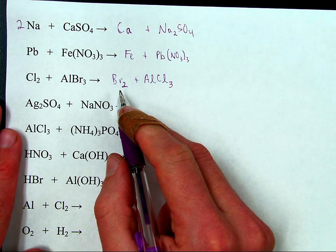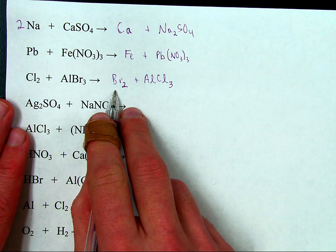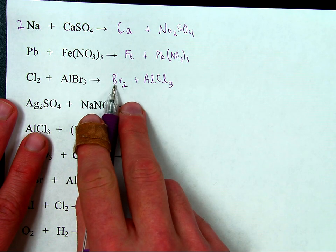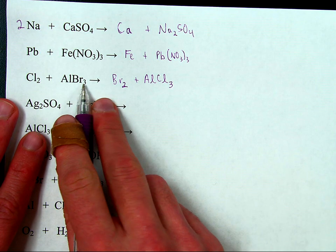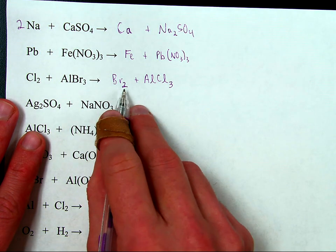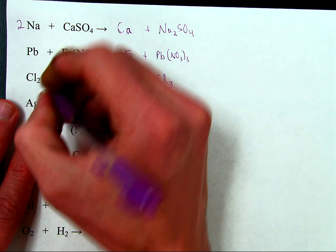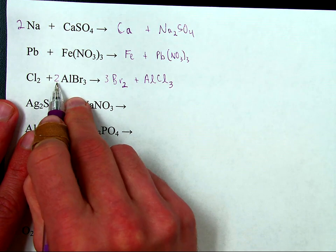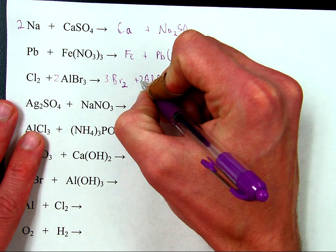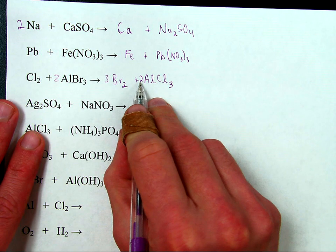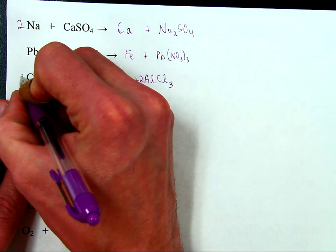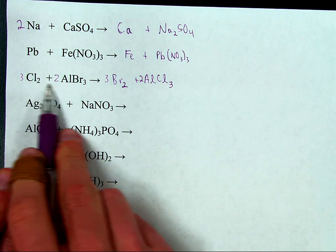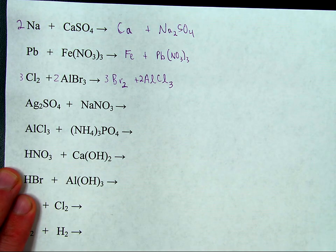Step three: balance the reaction. I see two bromines on one side and three bromines on the other. I'll put a two here and a three here, so that gives six bromine on each side. That gives me two aluminum, so let's make that two aluminums. Two times three is six chlorines, so I put a three here — six chlorines on each side. That's a properly balanced equation.